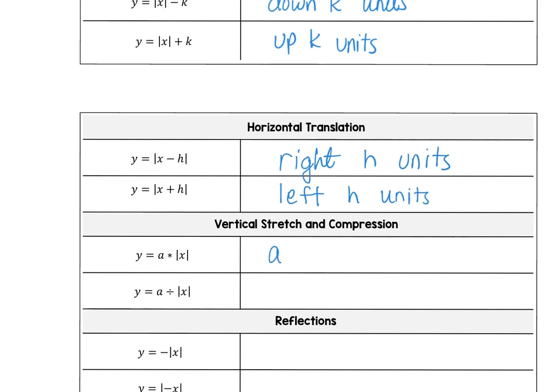When the a value is bigger than one, that vertically stretches the absolute value function. When the a value is a fraction, that vertically shrinks the graph.